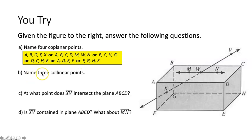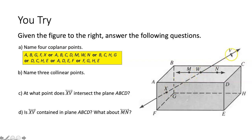Name three collinear points. Collinear means they have to be on the same line. There are only two sets of three collinear points: points M, W, and N all exist on the same line, and points X, W, and V all exist on the same line.